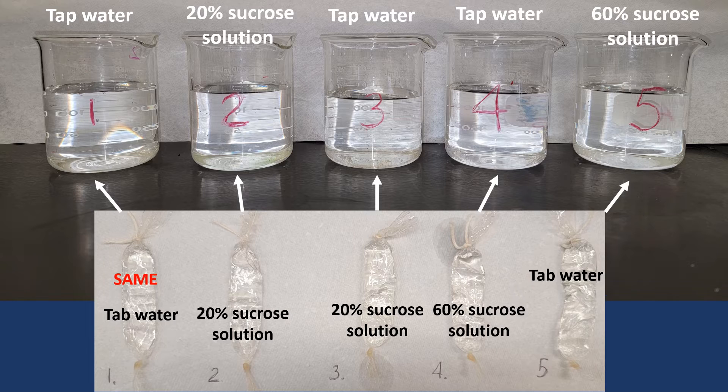If we submerge dialysis bag number two filled with 20% sucrose solution into the beaker containing 20% sucrose solution, will the bag mass increase, decrease, or stay the same? Again, think. Is the solution in beaker two hypertonic, hypotonic, or isotonic? You are correct. It is isotonic. Therefore, over time, the molecules of water will rush into the bag from the beaker.